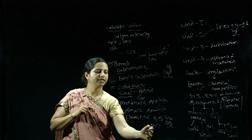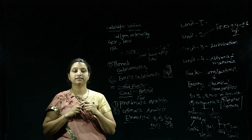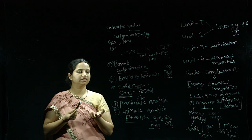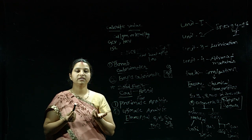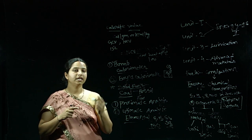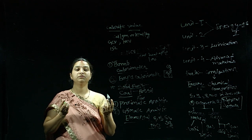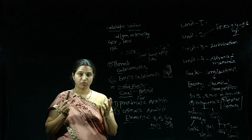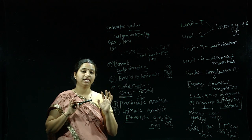Nitrogen should be less because it is an inert gas — it does not burn under normal conditions and is therefore not useful. Oxygen should also be less because the presence of oxygen indicates the presence of moisture. So we do not want oxygen at all.